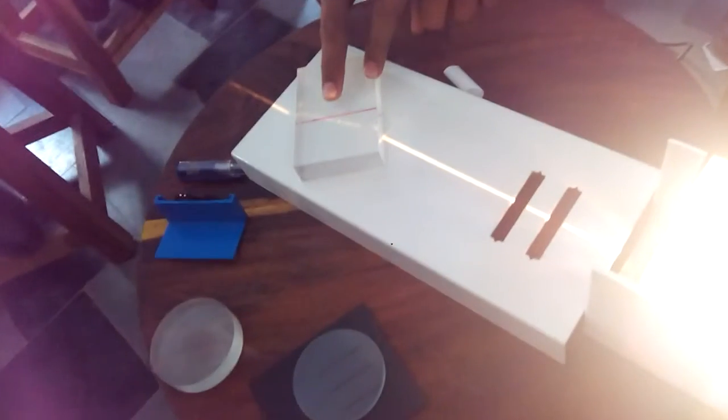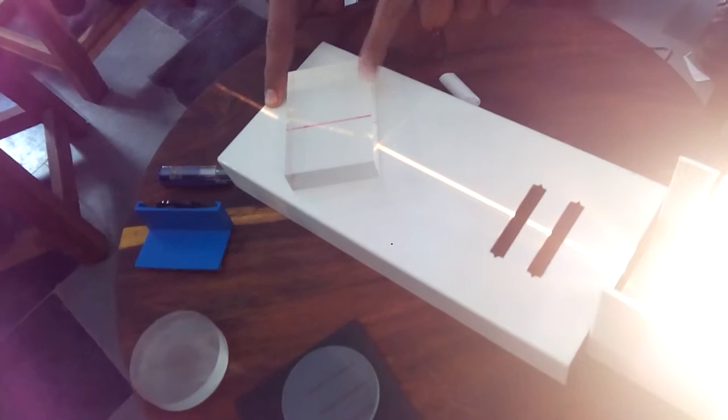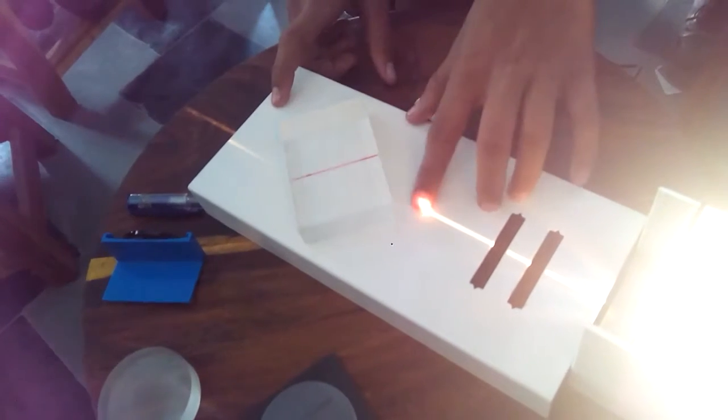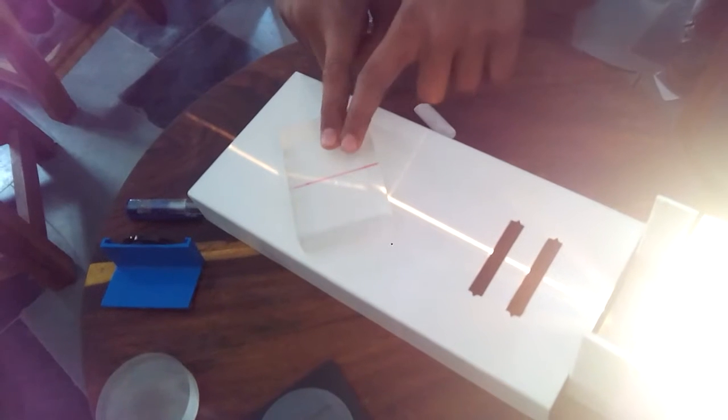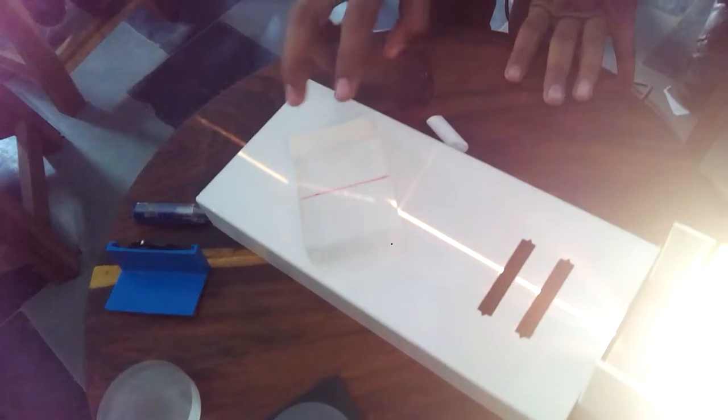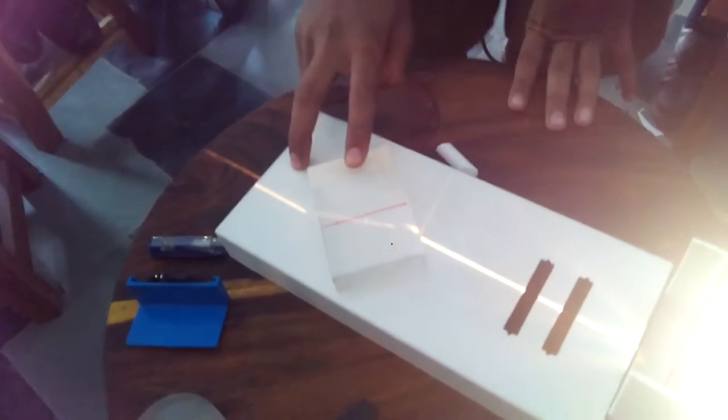This ray is called incident ray. This is called refracted ray and this ray is called emergent ray. This is air and this is glass slab and again it is air. Because of these two mediums, light has to bend. I will show you a diagram of this experiment.